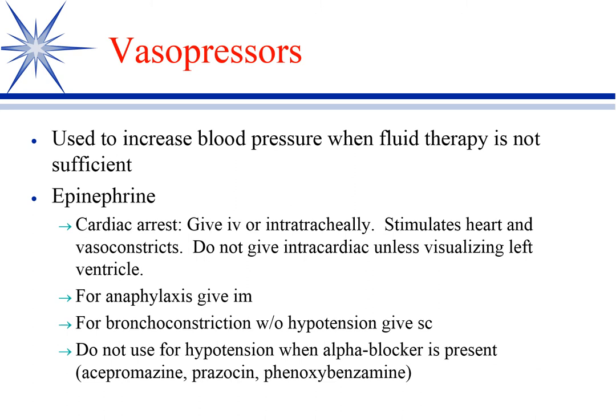Back when I talked about autonomic nervous system drugs, I made the point that you don't give epinephrine if the patient has an alpha blocker on board. This is called epinephrine reversal. Epinephrine stimulates all three adrenergic receptors: alpha-1, beta-1, and beta-2.